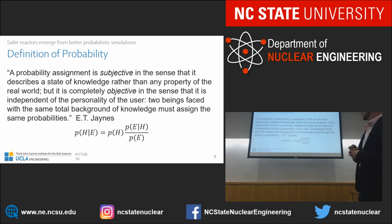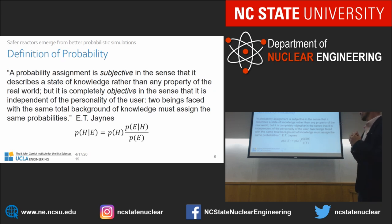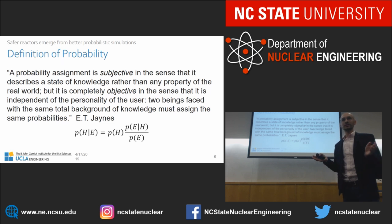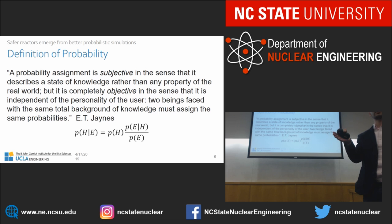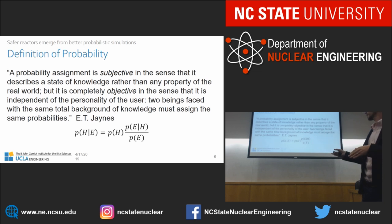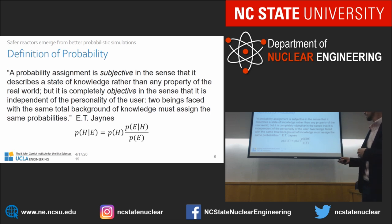The definition of probability: probability assignment is subjective in the sense that it describes a state of knowledge rather than any property of the real world, but it is completely objective in the sense that it is independent of the personality of the user. Two beings faced with the same total background of knowledge must assign the same probabilities. You can think of it as: you throw the body of knowledge to a computer, it's going to give you the same answer. The basis of this is Bayes' theorem. If you have a hypothesis H, the probability of the hypothesis given certain evidence depends on the prior probability of the hypothesis scaled by the probability of the evidence given the hypothesis, divided by the probability of the evidence. All machine learning techniques use this fundamental theorem.